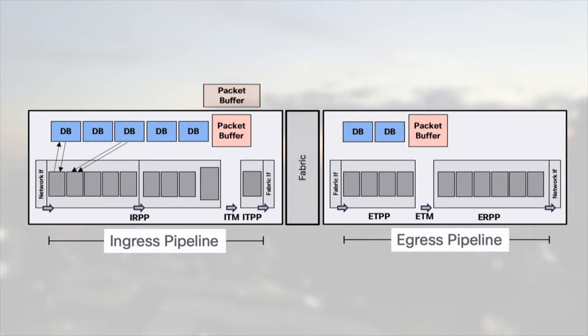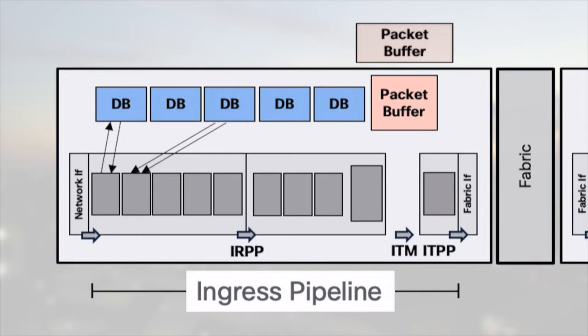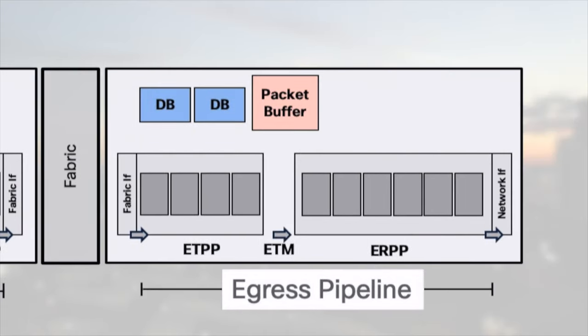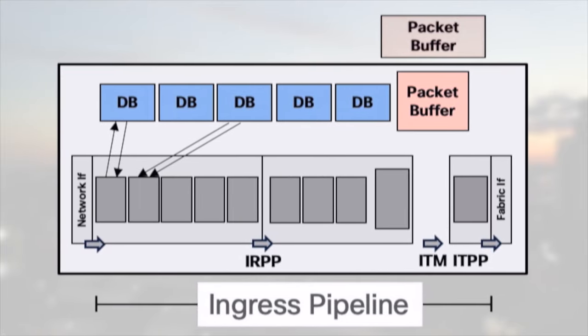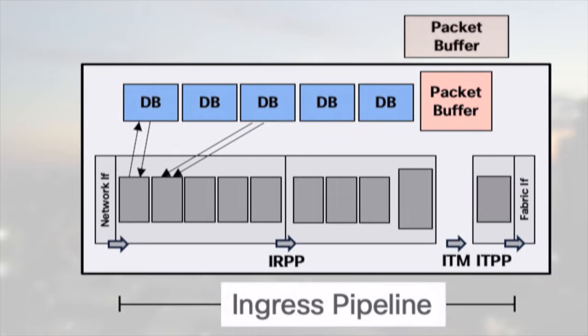Packets are received in the ingress pipeline and always exit through the egress pipeline. The ASIC is made of blocks and sub-blocks, each with a specific role in packet processing and queue management. Each block has access to multiple resources with predictable read/write counts — giving very predictable performance. Regardless of the features applied or FIB size, as long as the packet does not recirculate, the packets-per-second rate will be consistent. This is a significant difference compared to run-to-completion type ASICs.